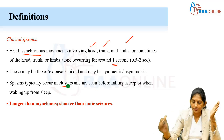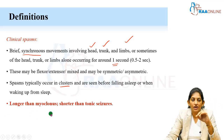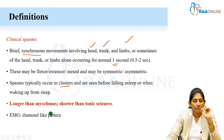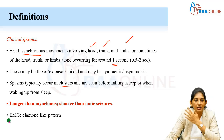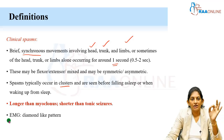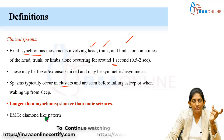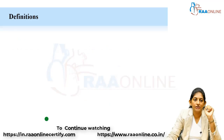Spasms are described as something longer than myoclonus and shorter than a tonic seizure. When in doubt, we do EEG and EMG together. The EMG is done from the neck and limb muscles and will show a diamond-like pattern. When this EMG is collaboratively interpreted with EEG, it gives the correct diagnosis of West syndrome.